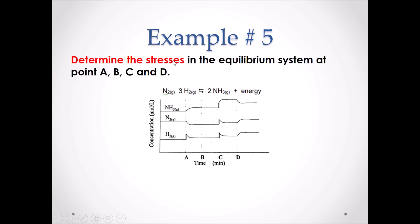Example number five. Determine the stress in the equilibrium system at points A, B, C, and D. At point A, I can see that we are spiking H2 gas. It is also important to note that all species in the chemical equation are gases. So if this was a pressure or volume change, all species would spike. Since it is only H2 gas spiking, I will assume that this is the addition of H2 gas. At point B, there is no change in equilibrium. Therefore, this could be a variety of different stresses that do not affect equilibrium — for example, a catalyst or an inert gas.